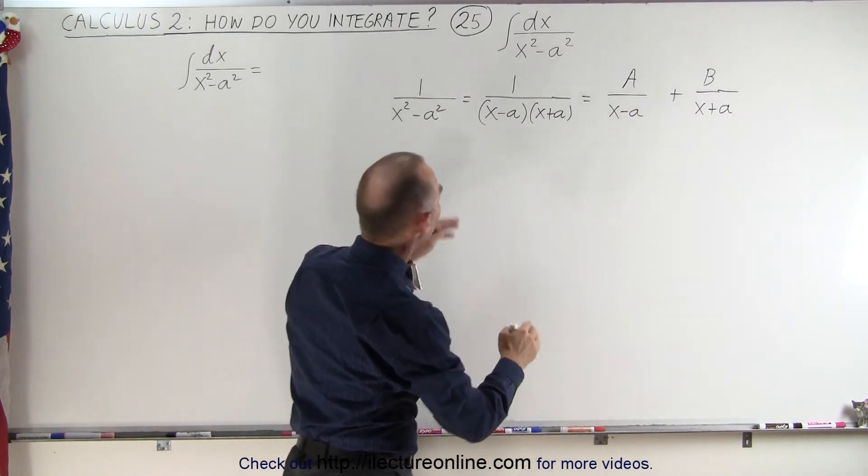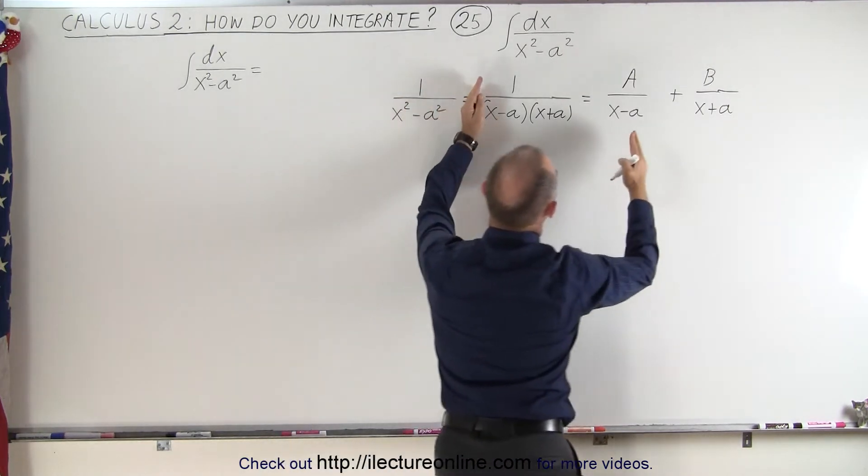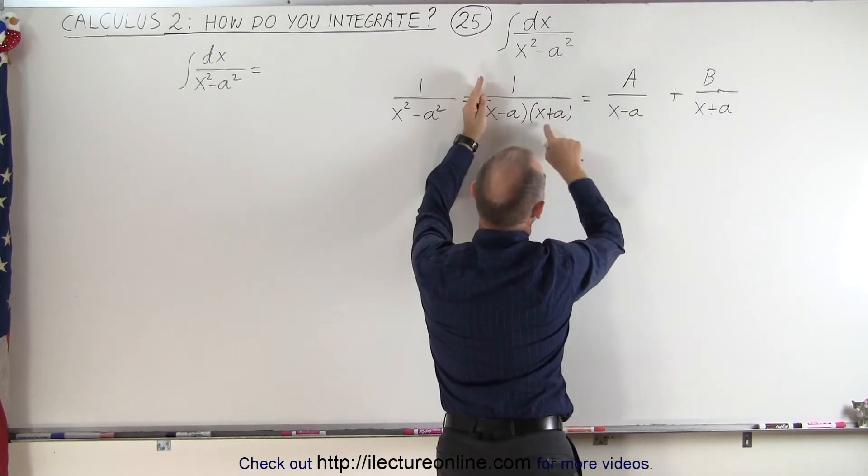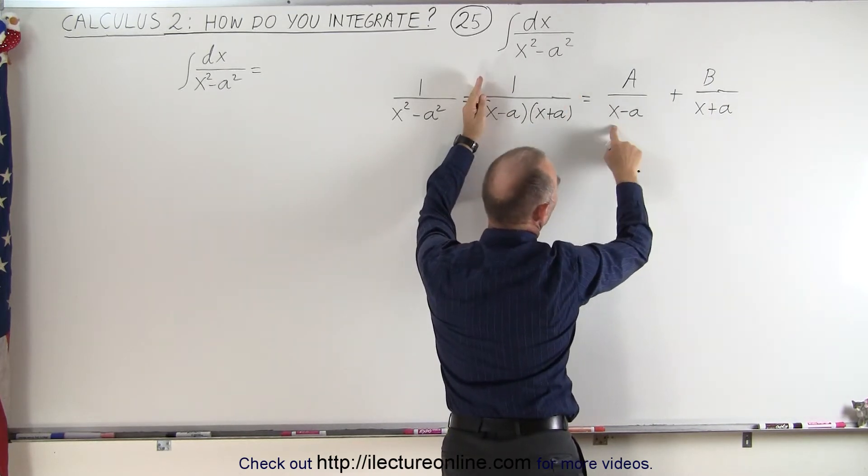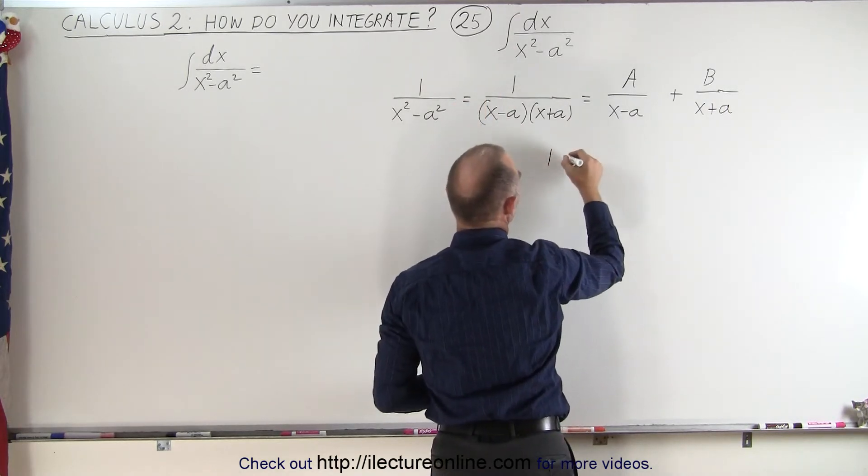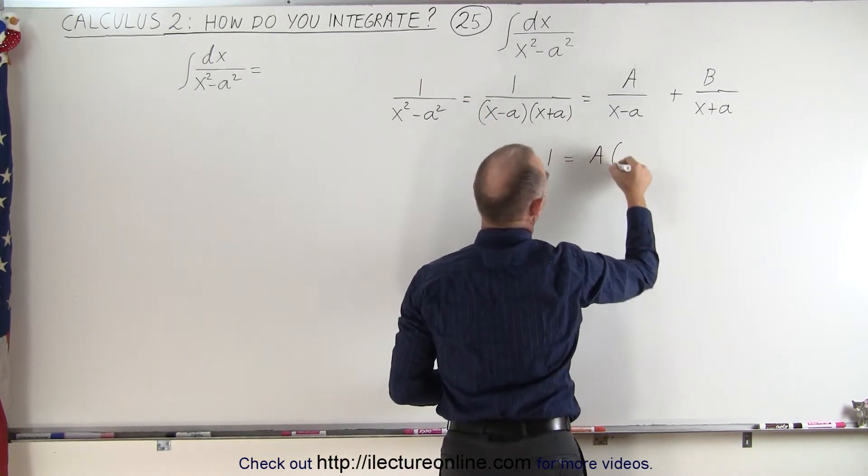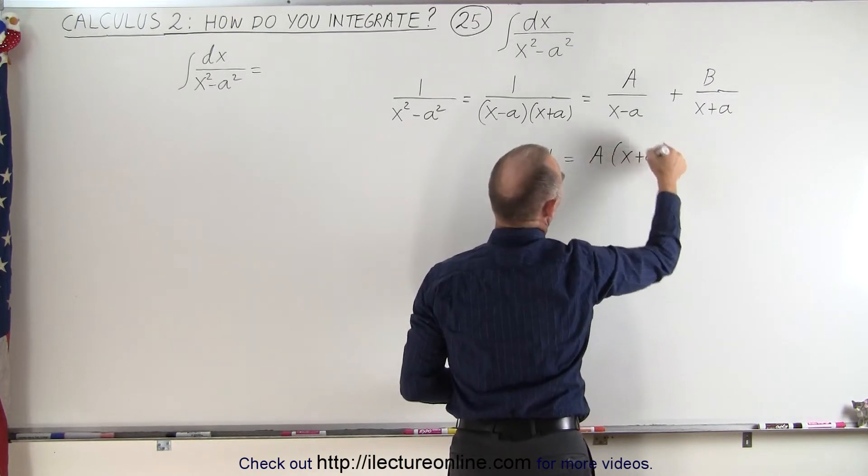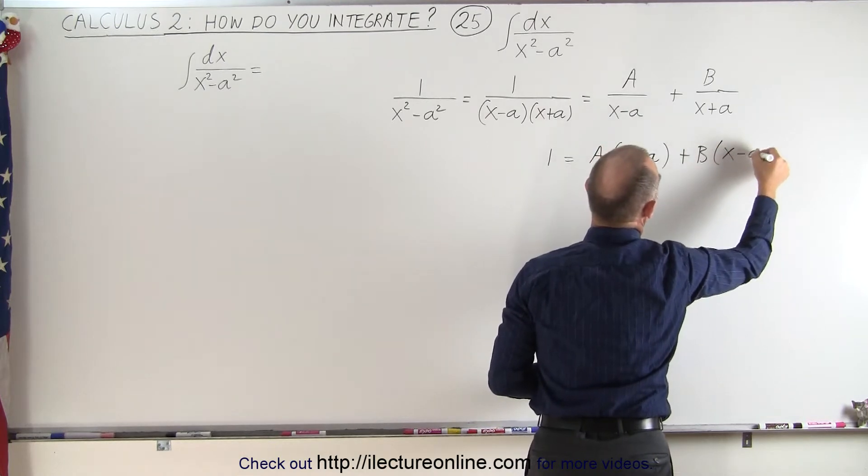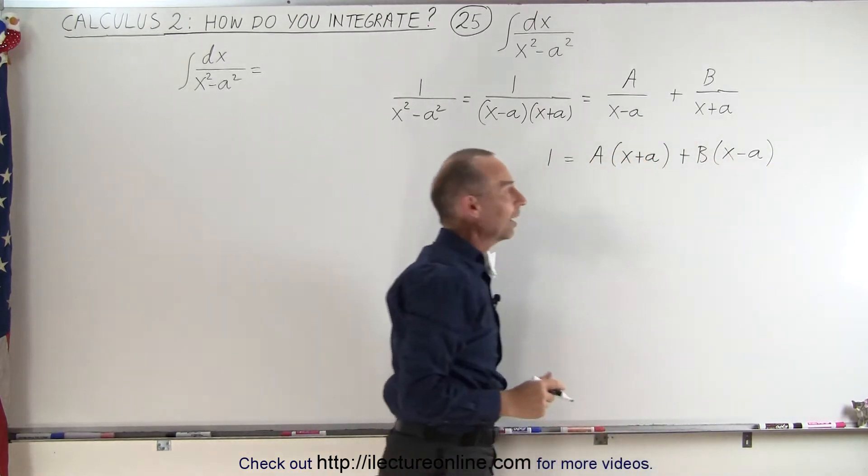So now when we multiply, if we ignore this for a moment and we just multiply both sides here, the left side by x minus a times x plus a and the right side by x minus a times x plus a, we end up with the following. We get 1 is equal to A times x plus a, since the x minus a cancels out, plus B times x minus a, since x plus a cancels out.